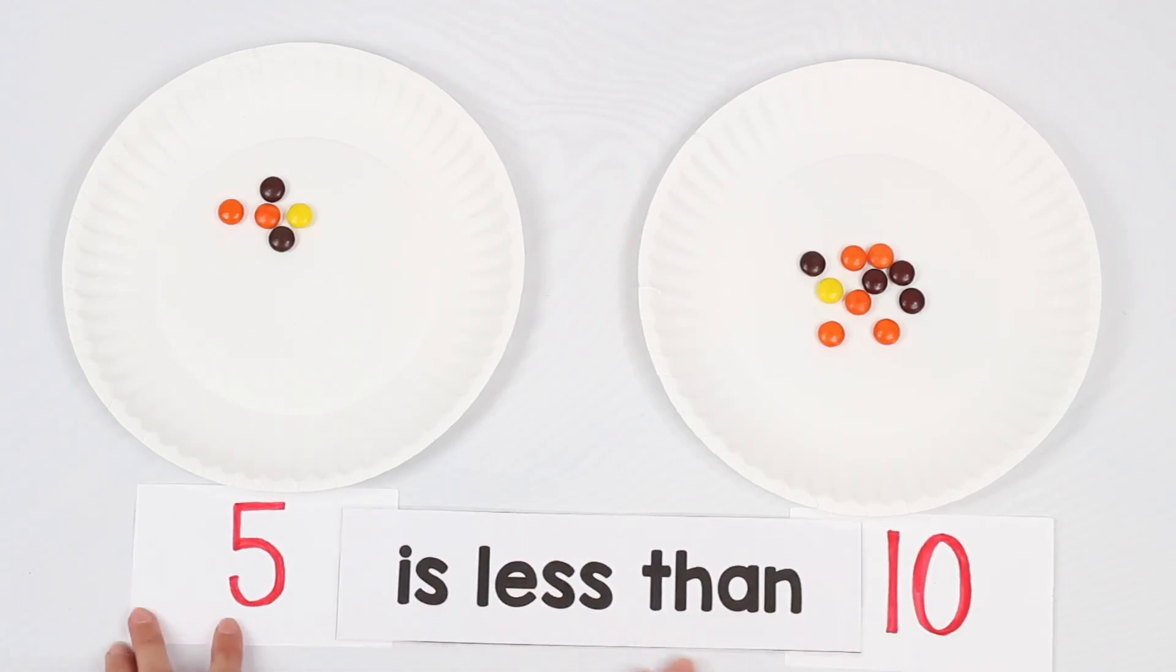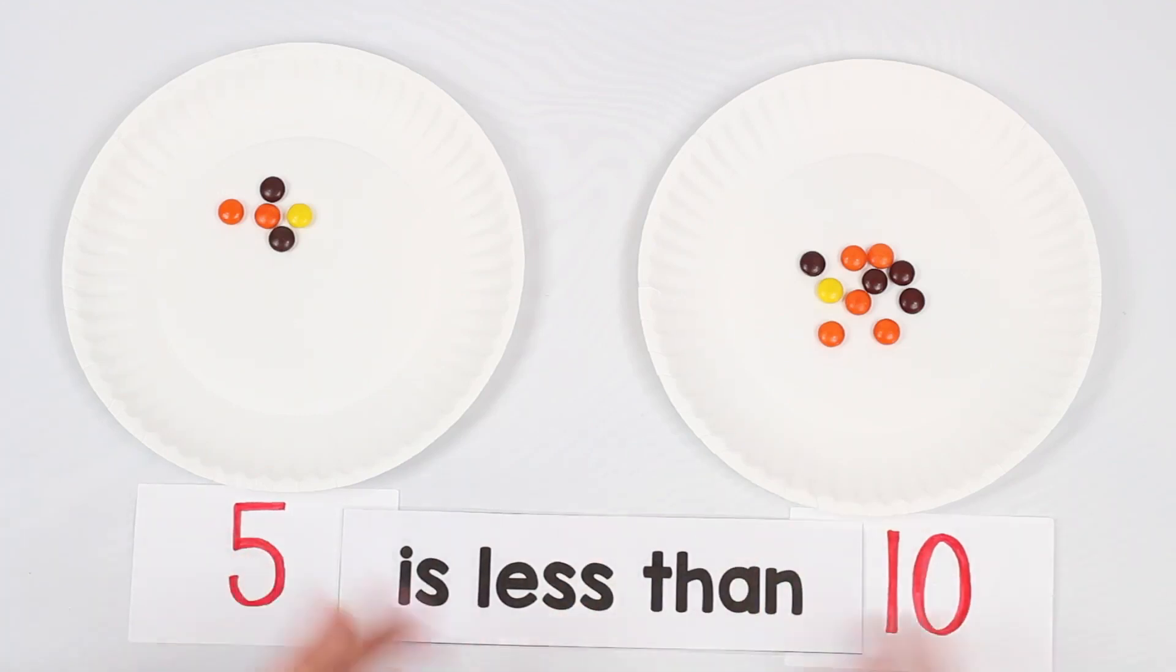Again, practice reading that comparison together. Five is less than 10. You can again do an example where the amounts are equal. But this just gives students familiarity with the vocabulary and the words behind comparisons before we move into using the abstract symbols.